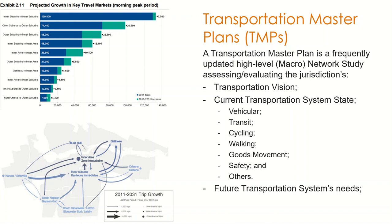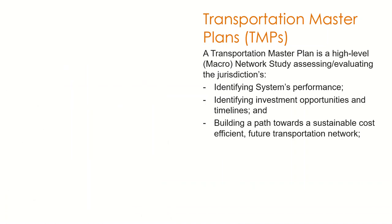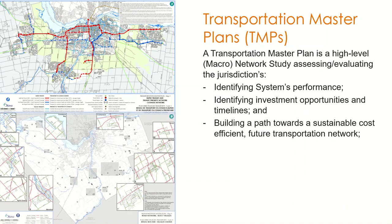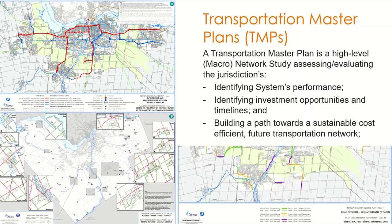The TMP also looks into future population patterns or growth, employment, and other network aspects. Through such analyses, the Transportation Master Plan goes into identifying the system's performance, where there are gaps, and identifies investment opportunities and timelines towards building a path to have a sustainable, cost-efficient future transportation network.